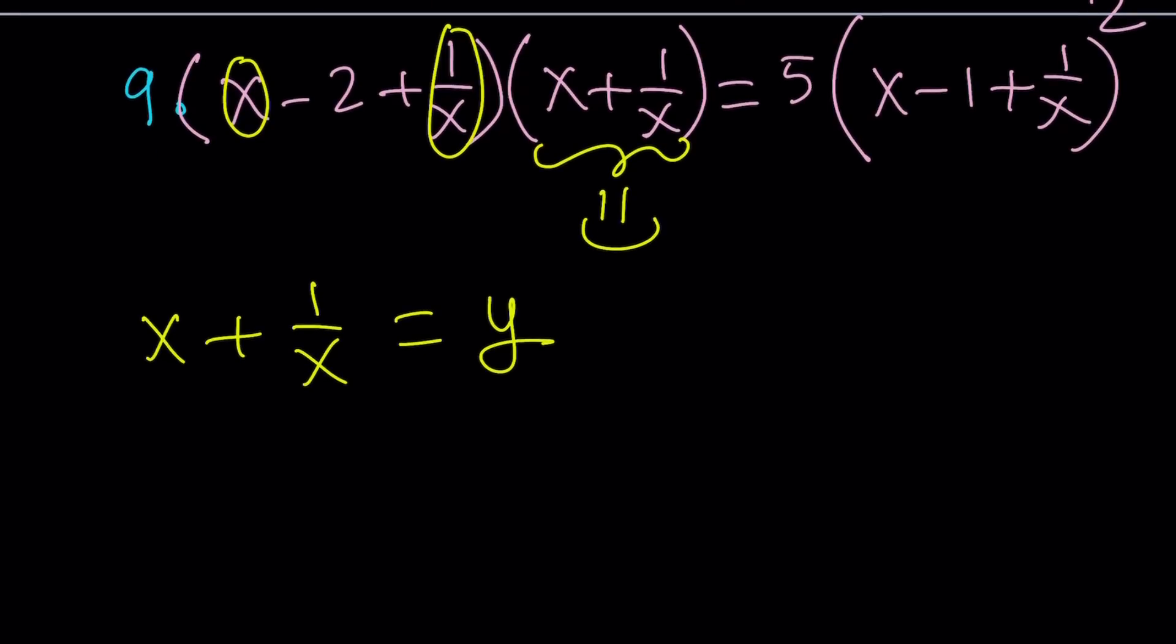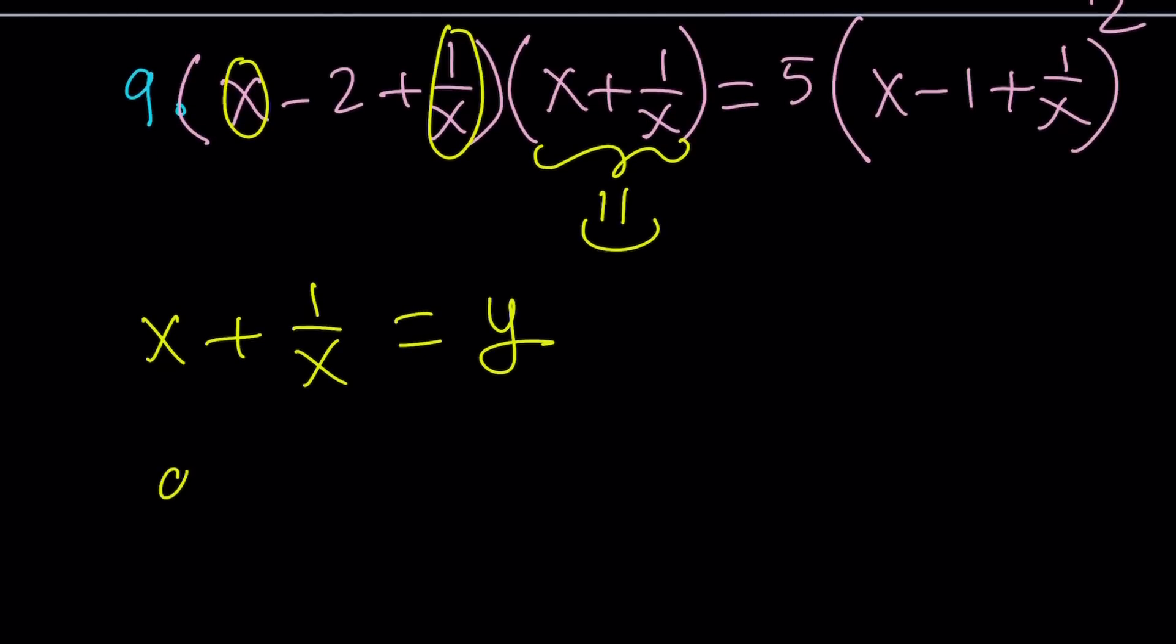Don't question y. Then this gives us the following: 9 times y, and notice that this is minus 2, times y equals 5 times this plus this is y, y minus 1 squared. And yay! This is quadratic. Isn't that awesome?